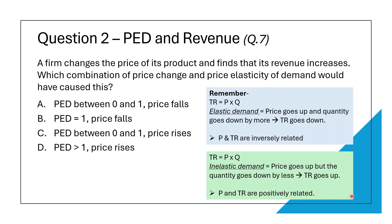Based on this knowledge, let's go back to the question. The firm changed the price and revenue rose. This can only happen when demand is inelastic. If we assume price has risen, the drop in quantity demanded would be smaller than the percentage increase in price, which would ultimately cause revenue to increase. So the correct answer is option C.